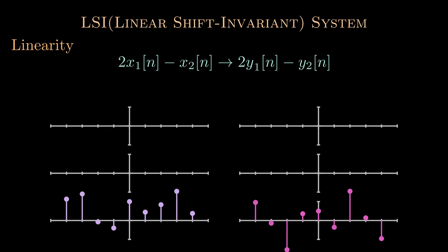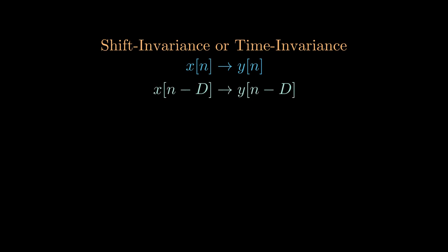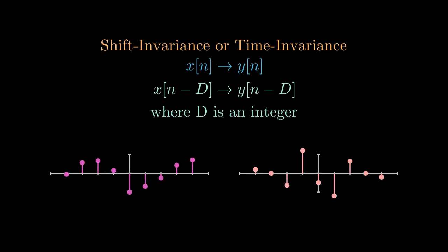Now the next property is shift invariance. So let's say y[n] is the system response of x[n], then this property says that the system response of x[n minus D] is y[n minus D]. That means if we shift the input signal by a certain amount capital D, the output is also shifted by the same amount.